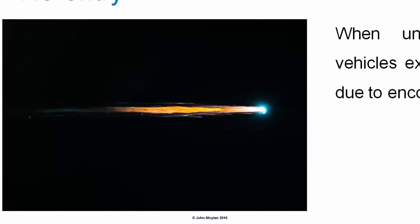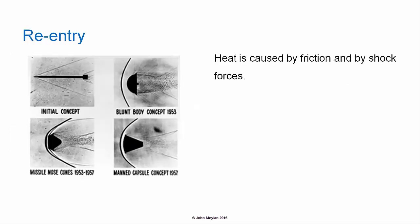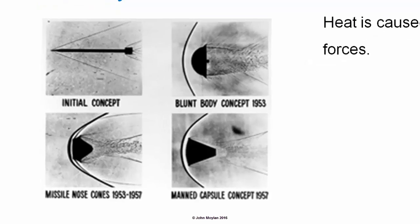During re-entry into the earth's atmosphere, space vehicles experience heat and g-forces due to encountering the atmosphere. Atmospheric entry altitude is defined as 100 kilometers, whereas in fact the atmosphere extends to around 10,000 kilometers. Heat is caused by friction and by shock forces, as shown in diagrams from tests involved in the design of re-entry vehicles.